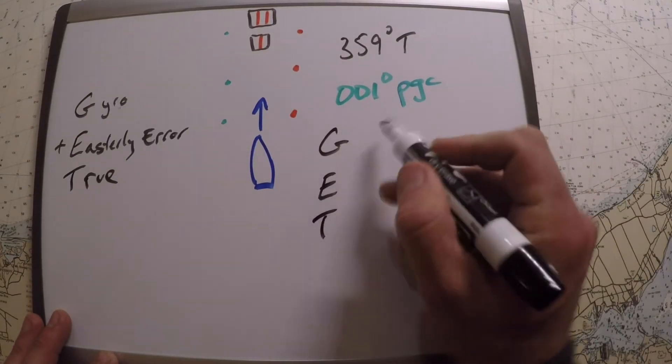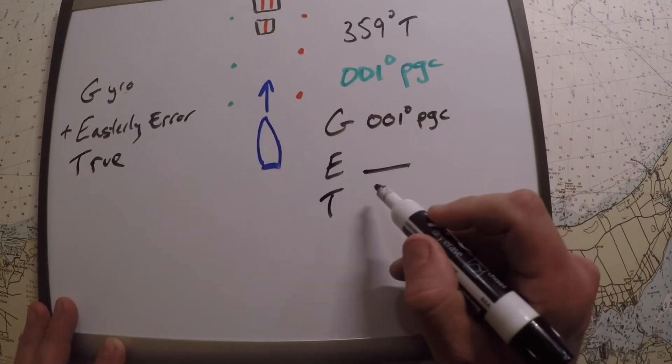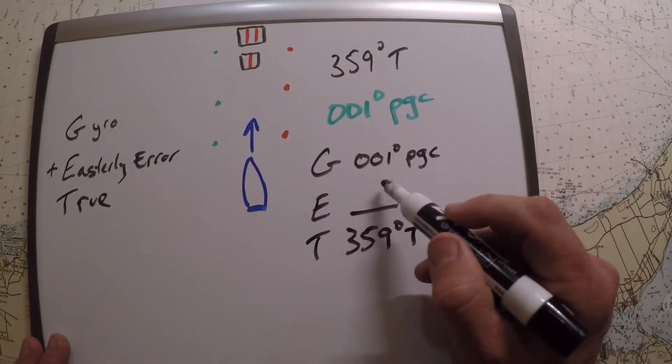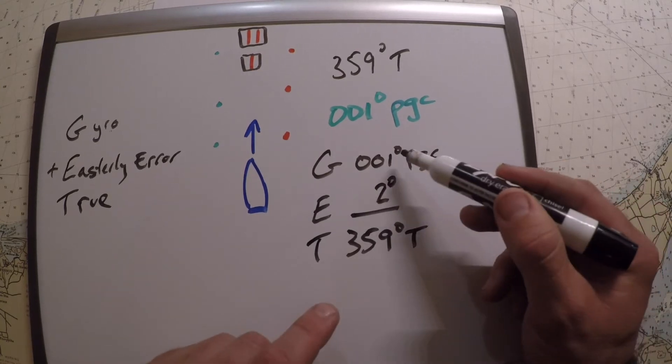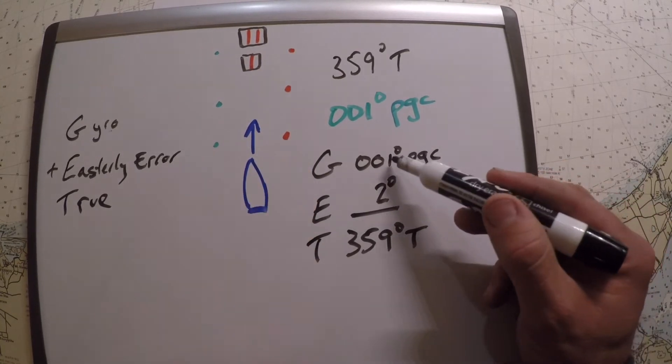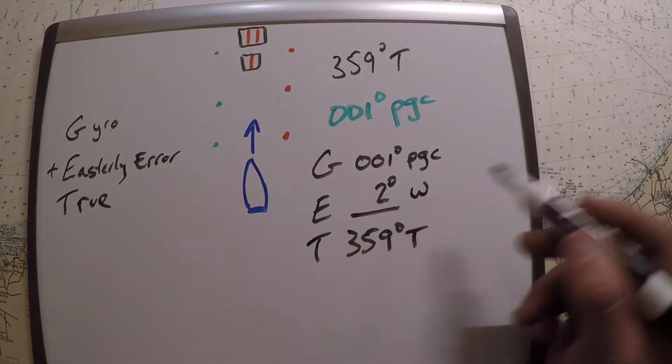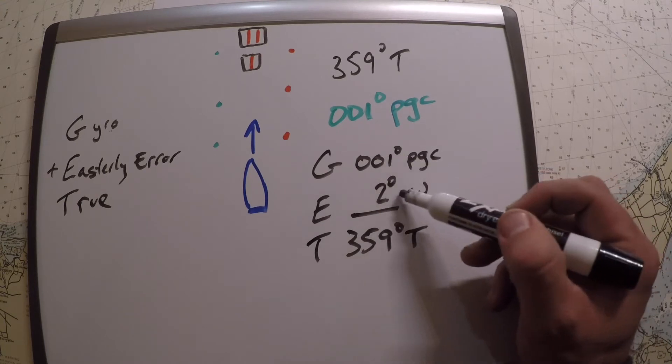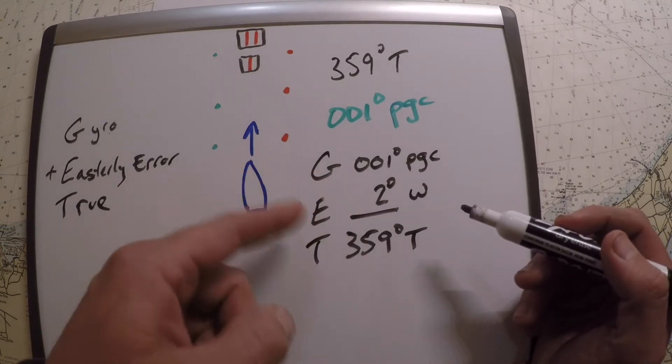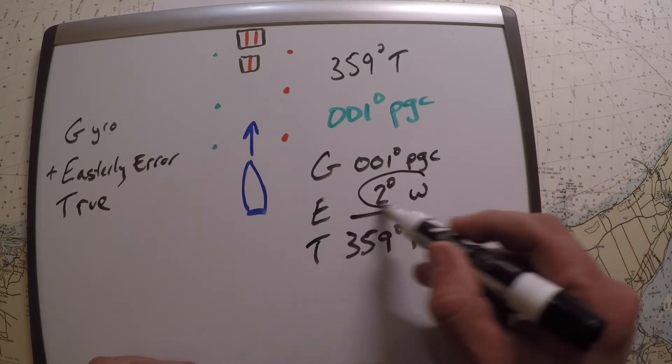Your gyro was 001 degrees per gyro compass, we're looking for the error, and the true was 359 degrees true. So what's the difference here? Well, it's clearly two degrees. But the memory aid is gyro plus easterly error, so did we add easterly error? No, in this case we would need to subtract, which means that the error is west. So 001 minus two degrees is 359.